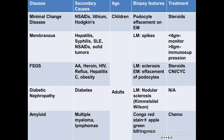Amyloid has primary (AL) and secondary (AA) forms. Primary is associated with multiple myeloma; secondary with conditions like rheumatoid arthritis. On your exam they'll give you a patient with AKI and proteinuria and ask what stain you'd use. You use the Congo red stain — under polarized light it turns apple-green birefringence. Treatment is chemotherapy, usually via referral to hematology-oncology.